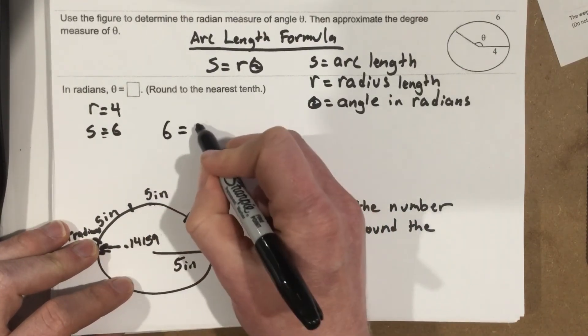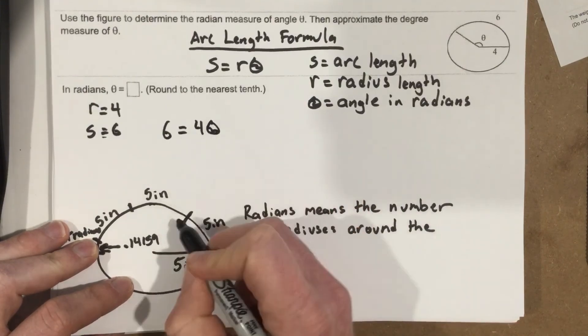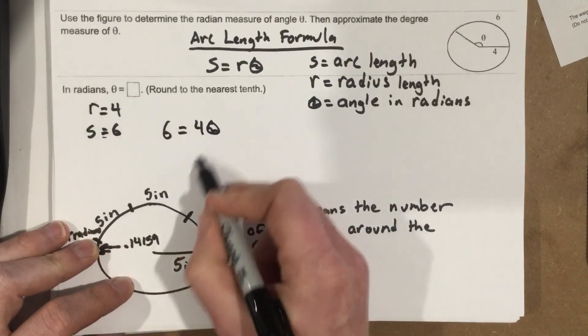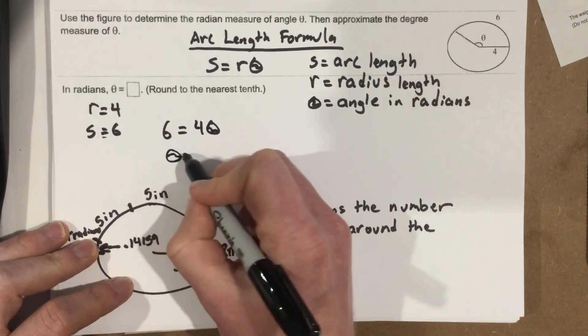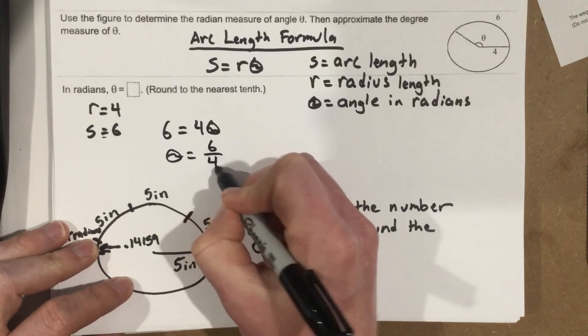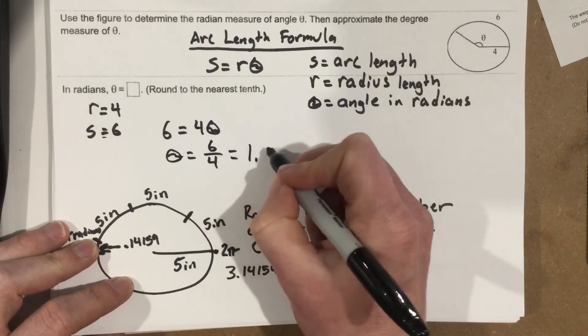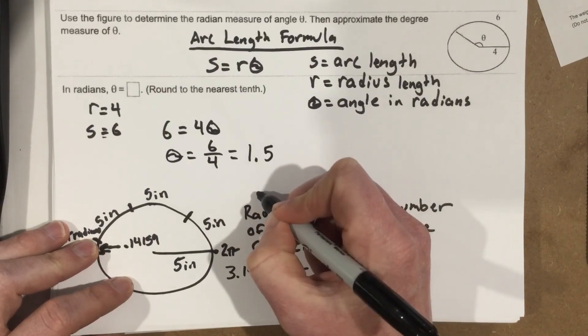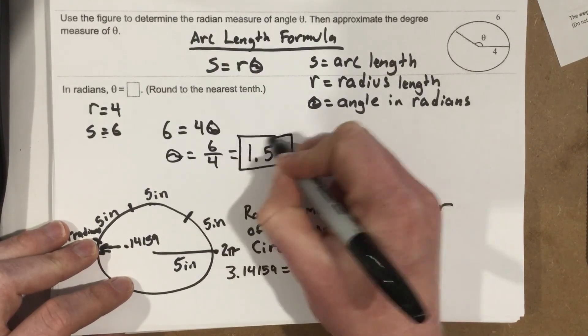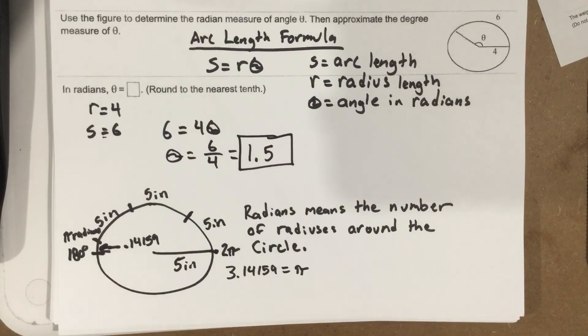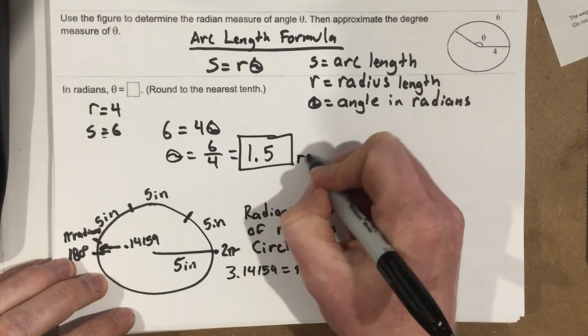6 equals 4 theta. They want us to find theta in radians. So we divide by 4 and we get theta equals 6 over 4. 6 over 4 gives you 1.5. So our answer here is 1.5 radians.